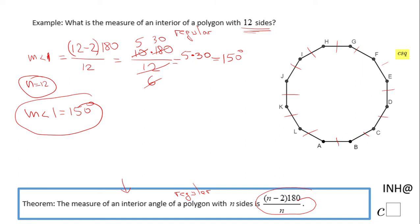And all the angles are equal. So my angle 1, which can be any of these angles A, B, C, D, E, F, G, and so on, all of them are 150. If you do not remember this formula...